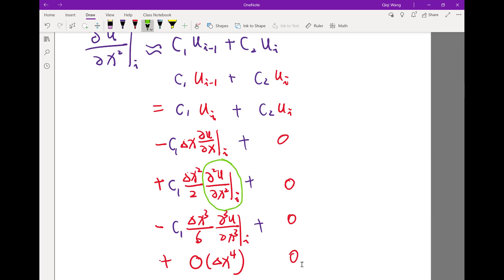I need three equations. I have to cancel out these terms and I need this term to turn out to be exactly what I need. Basically, I need this row to add up to the second derivative. So I have three equations. I only have two things to play with: C1 and C2. I need three things to play with.